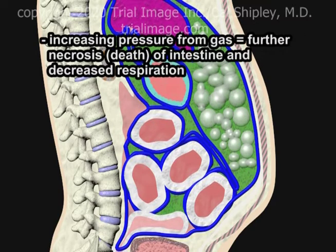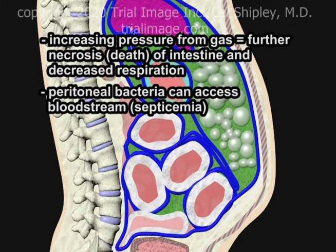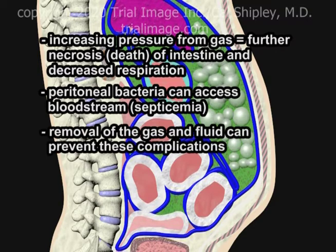Continued gas formation can result in steadily increasing pressure within the abdominal cavity, resulting in additional necrosis of small intestinal tissue, as well as progressive difficulty in breathing due to gas pressure exerted against the diaphragm, while bacteria from the fluid discharge can eventually access the bloodstream, resulting in septicemia, shock, and death. Removal of the gas and fluid from the peritoneal cavity can help to prevent these potentially very serious complications, and this is where procedures like the peritoneal tap come into play.